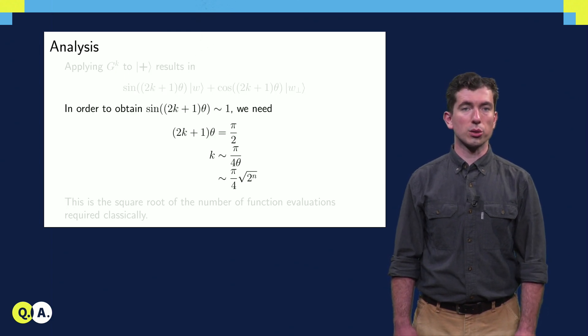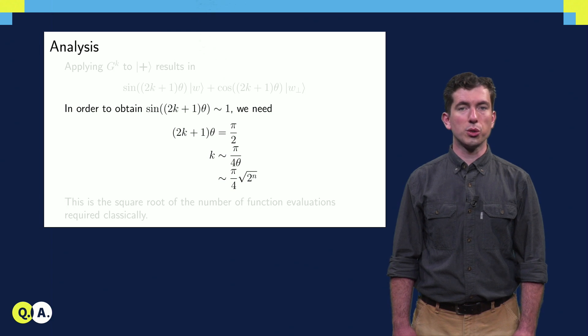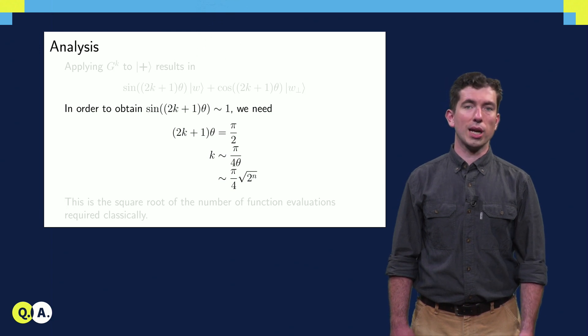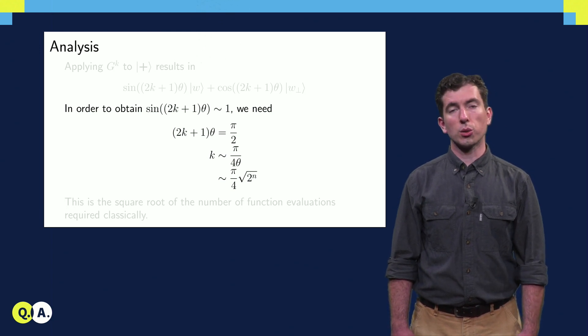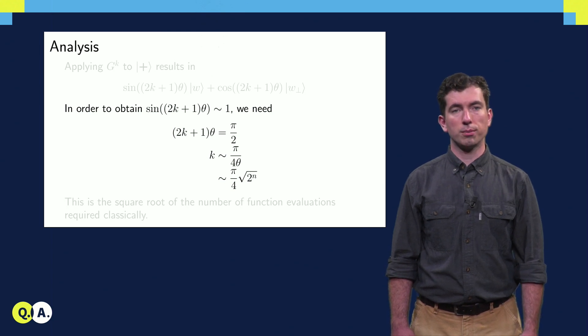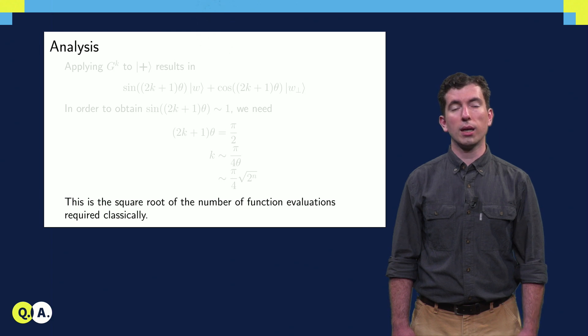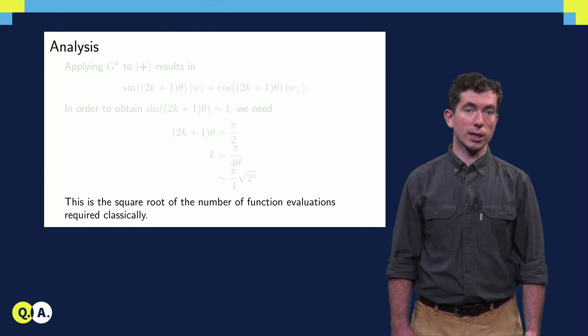In order to obtain a state close to W then, we have to choose k so that the sine of 2k plus 1 theta is close to 1. Now, the sine is close to 1 when the angle is close to pi by 2. So this gives us a k roughly equal to pi divided by 4 theta, which is roughly pi by 4 times root 2 to the m. This scales as the square root of the number of configurations we'd have to try in the classical case, providing us with an algorithm that has a polynomial speedup over the classical one.